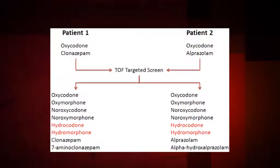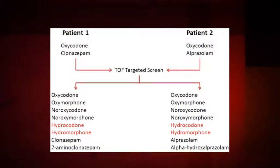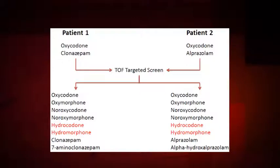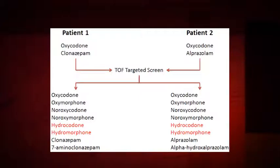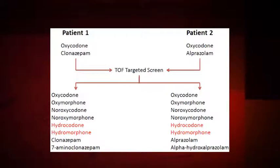To further disentangle the concepts of confirmation and quantitation, let's look at another example. Here we have two patients, each with prescriptions for oxycodone. Patient one also has a prescription for clonazepam, while patient two has a prescription for alprazolam. A targeted urine drug screen by time-of-flight mass spectrometry is conducted. Both patients had detectable oxycodone, oxymorphone, noroxycodone, and noroxymorphone, all consistent with oxycodone ingestion. Patient one was also positive for clonazepam and its major metabolite, 7-aminoclonazepam, while patient two was positive for alprazolam and the alpha-hydroxy-alprazolam metabolite.